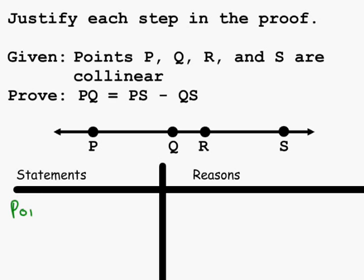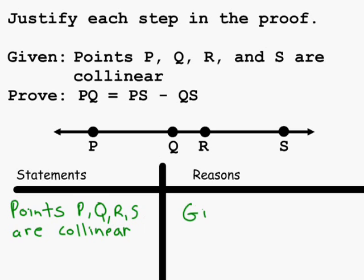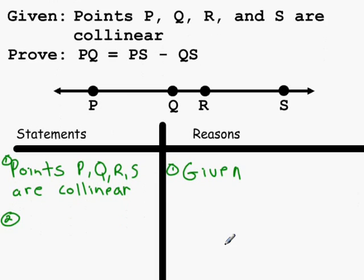The first statement we're going to make is that points P, Q, R, S are collinear, and the reason for that is that it is given. The second statement is that the measure of segment PS is equal to the measure of segment PQ plus the measure of segment QS, and that is given by the segment addition postulate.